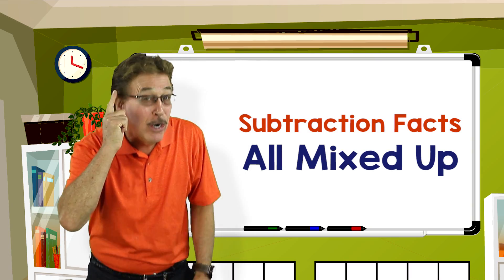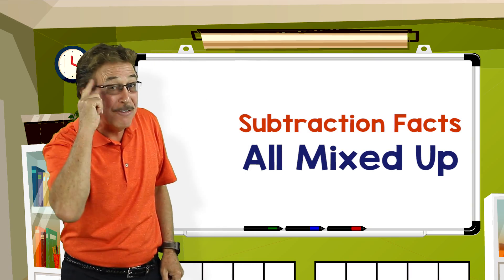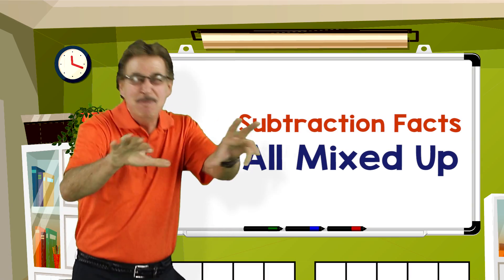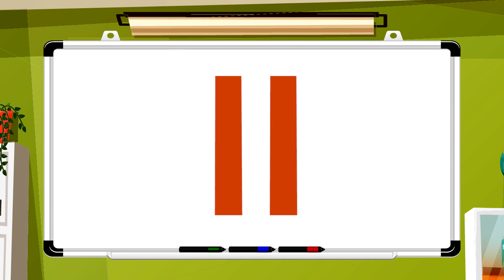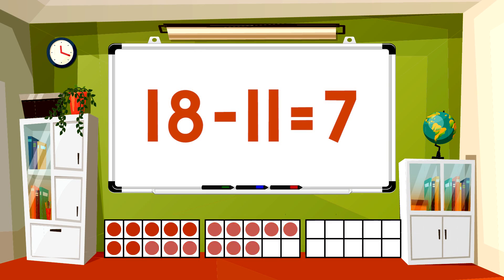Let's learn our subtraction facts, all mixed up. Subtract 11 from each number. 18 minus 11 equals 7.